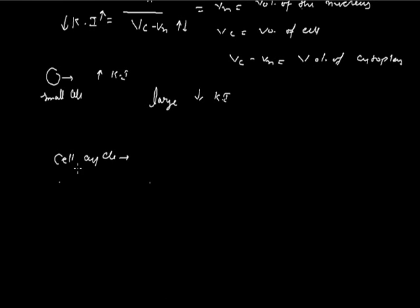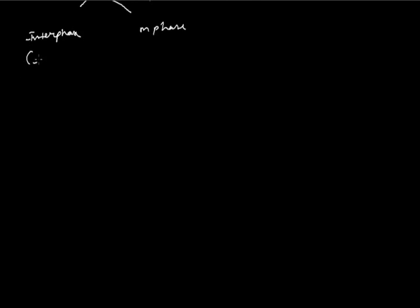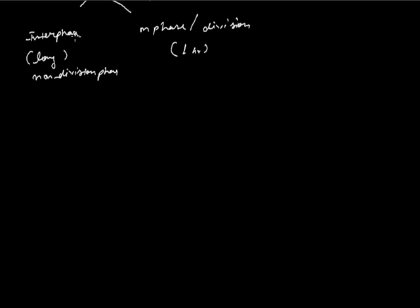Now, the cell cycle. What is the cell cycle? The process of cell division occurs in a cyclic form — that is the cell cycle. The cell cycle is further divided into two stages: the first is interphase and the second is M phase. Interphase is a long phase, that's why it is called the non-division phase. The M phase is also called the division phase, because division occurs at this stage. M phase is approximately one hour long and interphase is approximately 23 hours long.